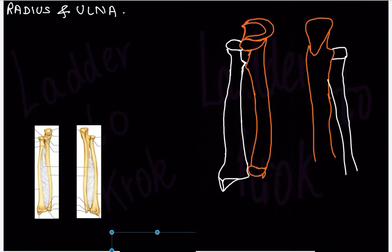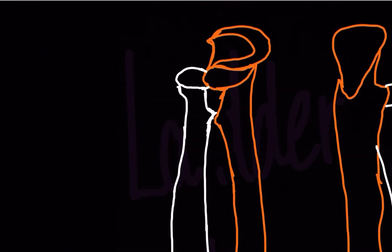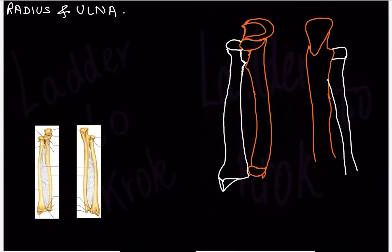Hello guys, welcome back. Let's start with a new topic: radius and ulna. In the previous video we covered the humerus, and there are a lot of things in the humerus that join with the radius and ulna. So first, radius is present towards your thumb side, and ulna is present towards your little finger — remember this at any cost.